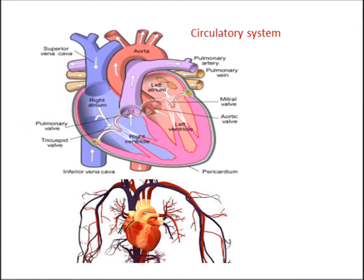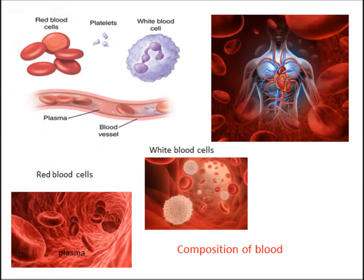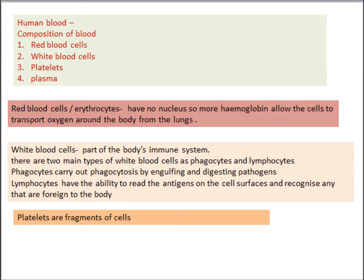Blood is the transport medium — it is not just a red liquid. It consists of different types of blood cells and blood plasma. Plasma is the liquid part of blood, and red blood cells transport oxygen. Lymphocytes, phagocytes, and platelets are types of white blood cells. You can pause the video and read these paragraphs.